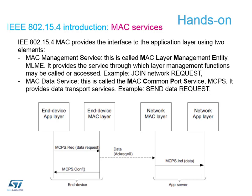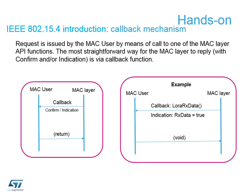In our network server and application server it works the same way — we get an indication from the MAC layer saying it has received some information, and the common port services send that indication up to the application layer. This transfers the information into the program stored in our application server, which does the comparison of the number we just sent. When we receive the indication, it automatically calls the LoRa RX data callback routine which we have to write.